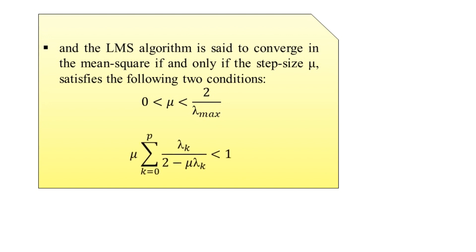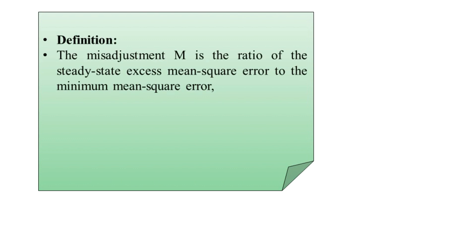Concerning versions of the mean square error, there is one more important parameter whose knowledge is essential for solving problems based on the LMS algorithm: the misadjustment, denoted by capital M. It is basically the ratio of the steady-state excess mean square error to the minimum mean square error. The mathematical formulation is: M = ζ_ex(∞) / ζ_min. This concludes our topic.